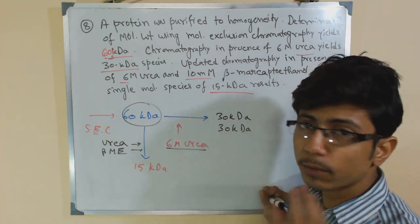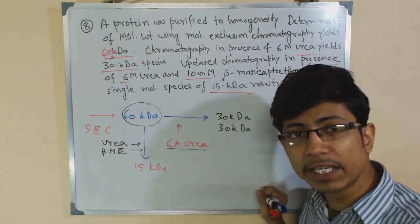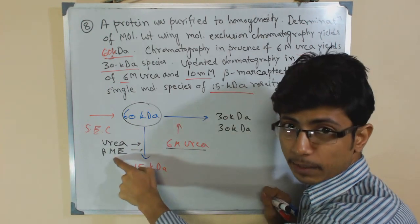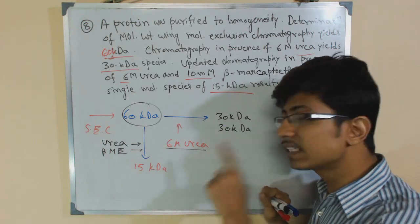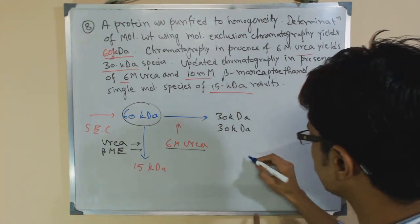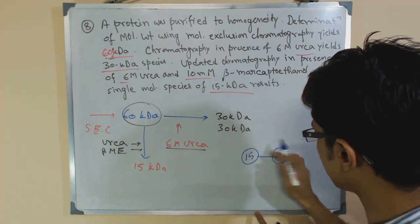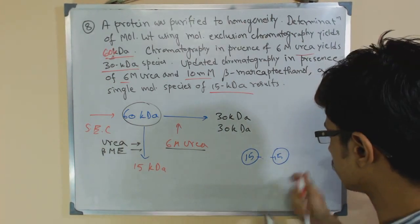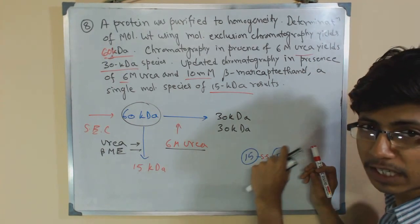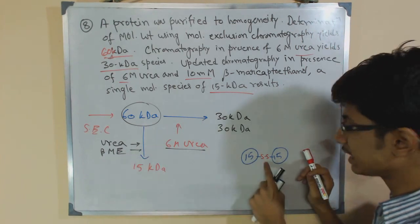That means if the total protein weighs 60 KD and after BME treatment we get 15 KD, then obviously there is a disulfide linkage present in this protein structure of 60 KD. The disulfide structure is broken using beta-mercaptoethanol — without that treatment, the disulfide structure is not broken, which is why we get 30 KD species instead of 15 KD.